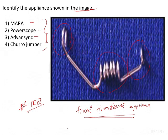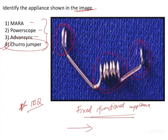It's always going to be some kind of appliance that consists of either a coil or a rigid structure, like a Herbst appliance, that is somehow going to keep the mandible in a forwarded position. The appliance given in this image is a ChurroJumper. We identify it because of its characteristic loops in the anterior and posterior direction as well as the coil in the center.